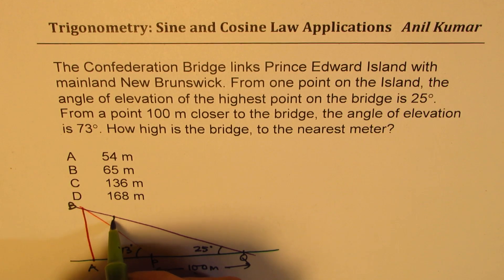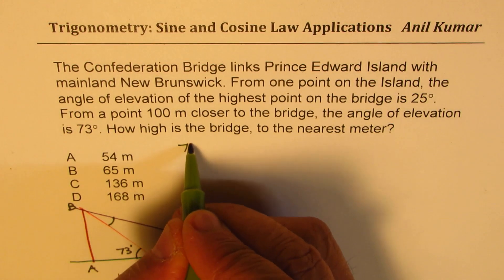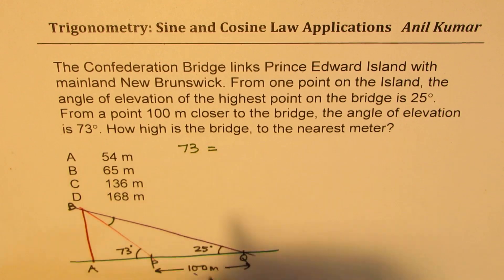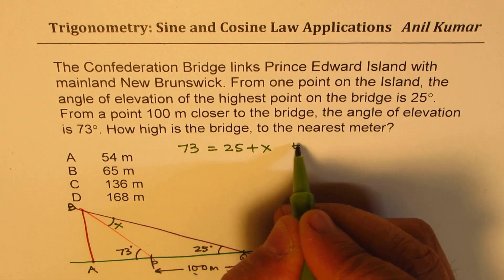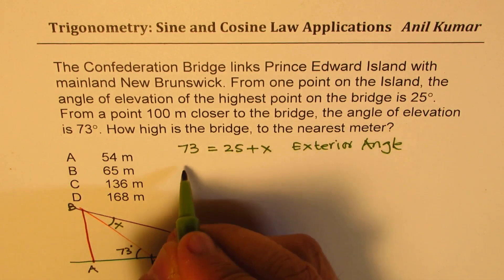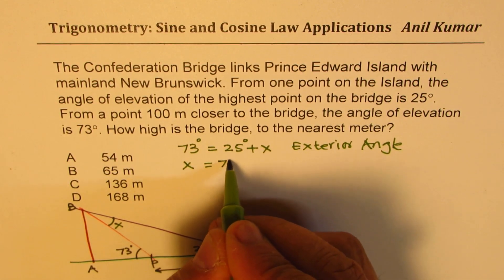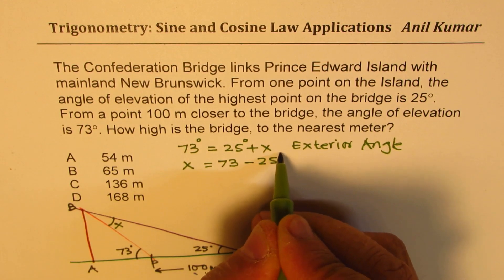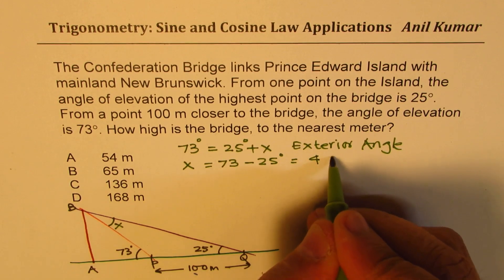The first step is to find the third angle. 73 is an exterior angle, so 73 should be equal to 25 plus X — let's call this angle X — because this is an exterior angle. So X is equal to 73 minus 25 degrees, which is 48 degrees.